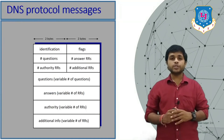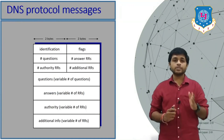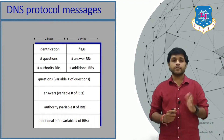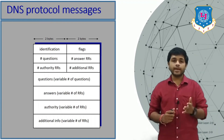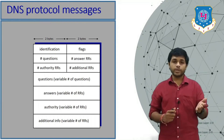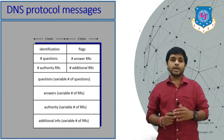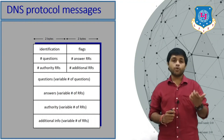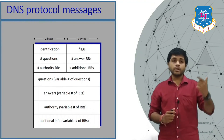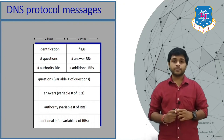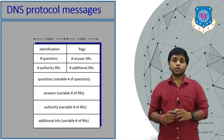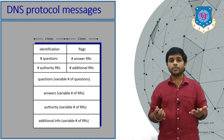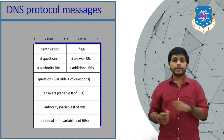This is the message generated by the DNS protocol. You can see there are different fields: identification, message flags, questions, answers, and more. Each field is 4 bytes long and there are 7 fields in total. This is the DNS protocol message format. If you have any doubts, you can ask in the comment section. Thank you so much.